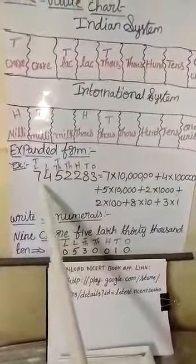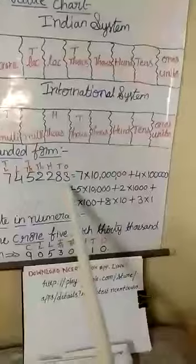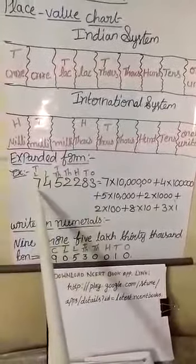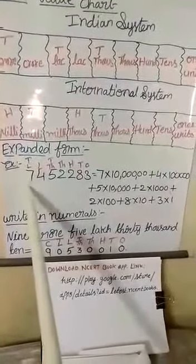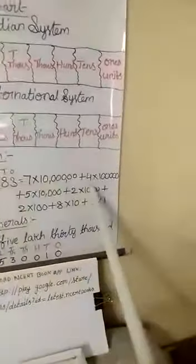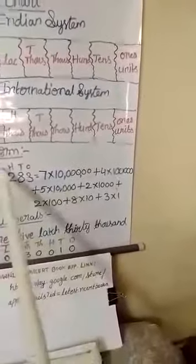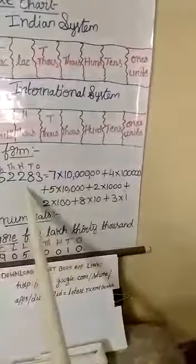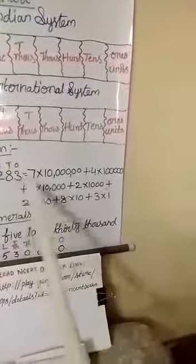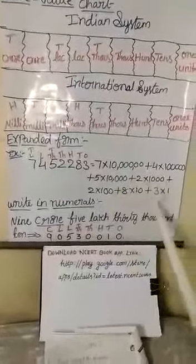Next is expanded form. For expanded form, if the number is 74,52,283, first you write the place value on top. Then: 7 × 10 lakhs, 4 × 1 lakh, 5 × 10,000, 2 × 1,000, 2 × 100, 8 × 10, and 3 × 1.